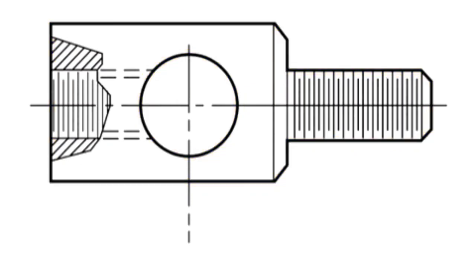Hidden lines consist of short dashes, evenly spaced. These lines are used to show the hidden features of a part. They begin with a dash in contact with the line from which they begin, except when such a dash would form a continuation of a full line.